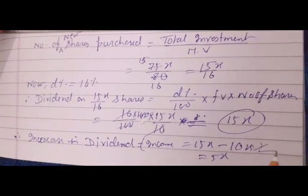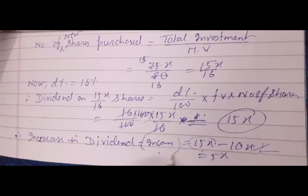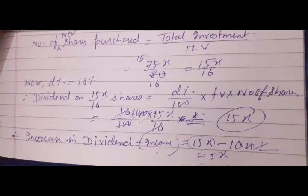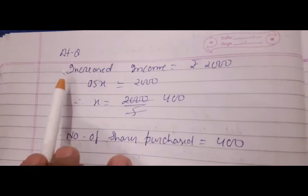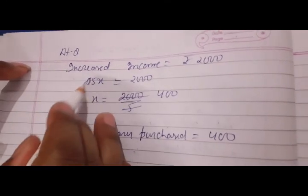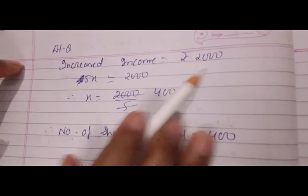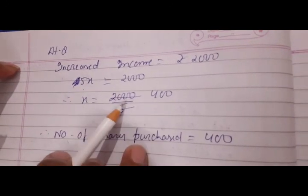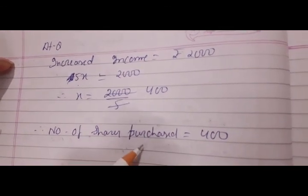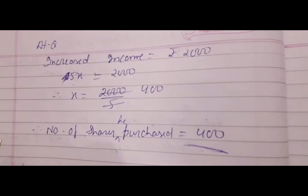In the first case he was getting 10x as dividend, and now he is getting 15x — so the increase in income is 15x minus 10x, which equals 5x. It is given that the increased income is rupees 2000. Equating: 5x equals 2000, so x equals 400. Since x was the number of shares, he sold 400 shares — and that is our answer.